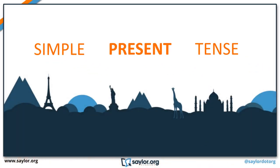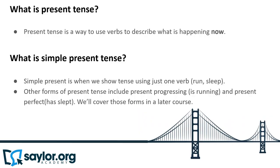Simple present tense. What is present tense? Present tense is a way to use verbs to describe what is happening now. Simple present is when we show tense using just one verb — for example, 'run' or 'sleep.' Other forms of present tense include present progressive ('is running') and present perfect ('has slept'). We'll cover those forms in a later course.